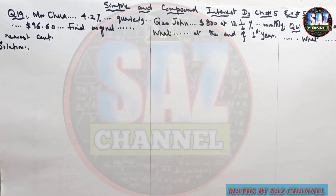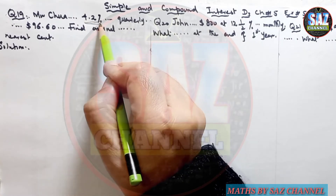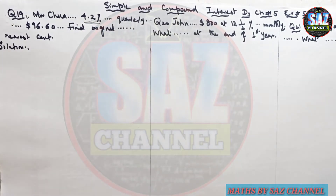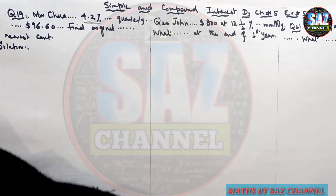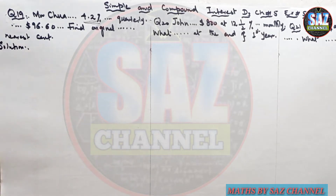Question 19 says: Mr. Choha borrows a sum of money from the bank, which charges compound interest of 4.2% per annum compounded quarterly. Given that Mr. Choha had to pay 96.60 in interest at the end of the first year, find the original sum of money he borrowed, giving your answer correct to the nearest cent.